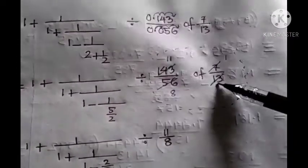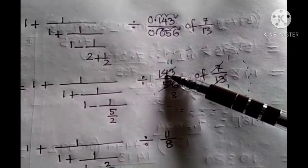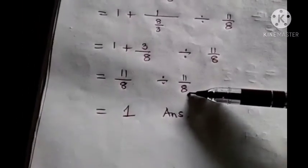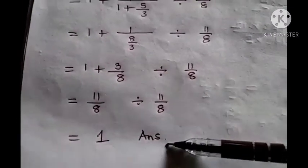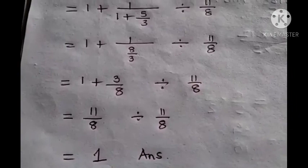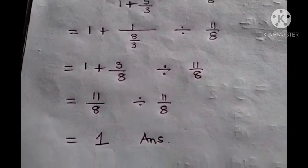I can see 13 and 143 cancelling to 11, so I get 11 by 8 all the way down. In the last line, 11 by 8 divided by 11 by 8 — the answer is 1.